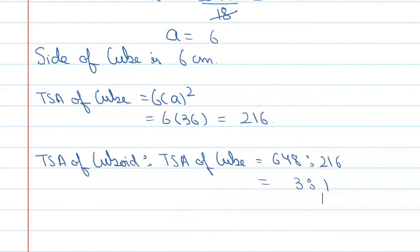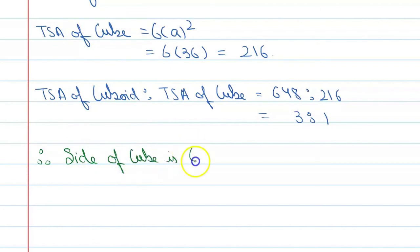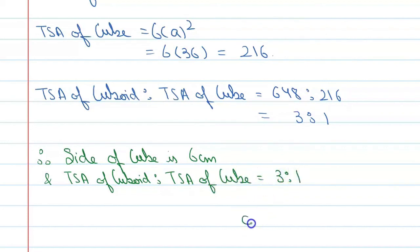So here we write our final answer: therefore, the side of the cube is 6 cm, and the ratio of total surface area of cuboid to total surface area of cube is 3 : 2. The correct option is C. Thank you.